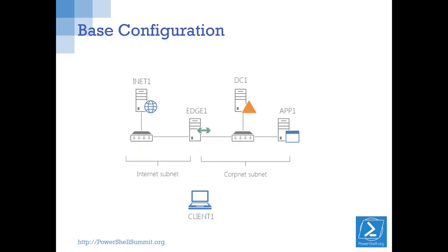The base configuration looks like this - there are five VMs spread across two networks. There's a domain controller, an application server basically running IIS, an edge server which is multi-homed, and an internet host which is not domain joined. In the Microsoft guide they provide a whole load of steps and actually give you the PowerShell commands to do this. The only issue is how do you get the infrastructure servers with the OS deployed.